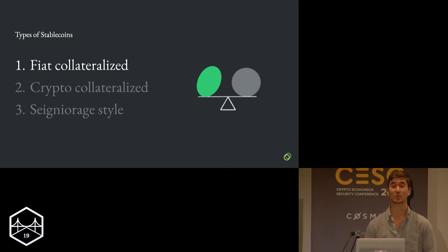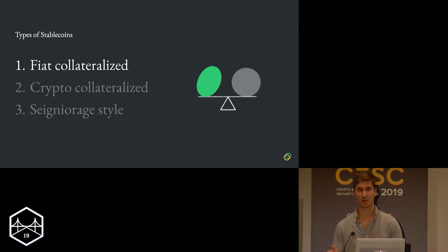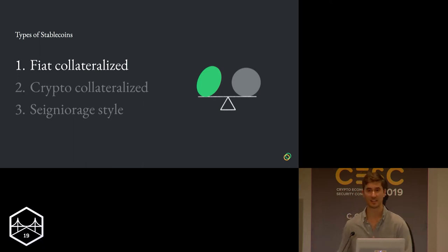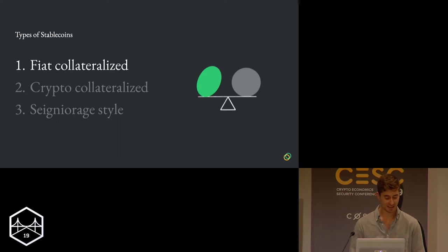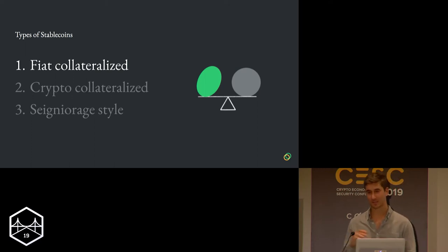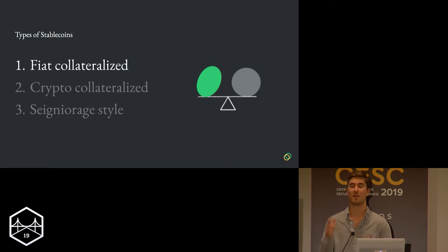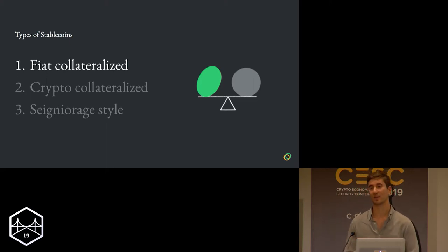First, there are fiat collateralized stablecoins. An example you might be familiar with is Tether. Fiat collateralized stablecoins generally act as IOU tokens. You take some fiat currency, say U.S. dollars, send it to a centralized third party, they give you some IOU tokens in return. And if you want your fiat back, you just give them the IOU tokens and they give you your fiat. There's something really effective about this from a stability perspective: there's a very simple and direct arbitrage cycle that exists when the price of the token deviates from its peg.